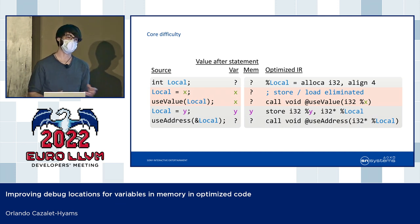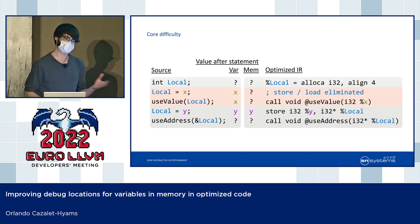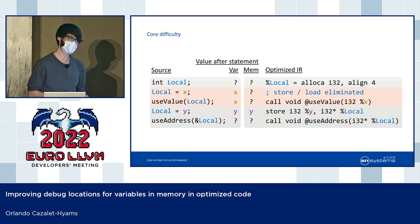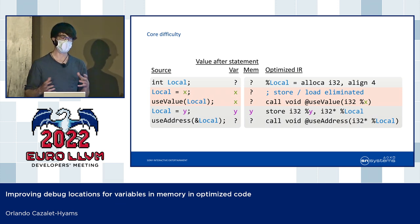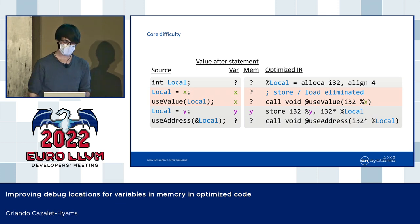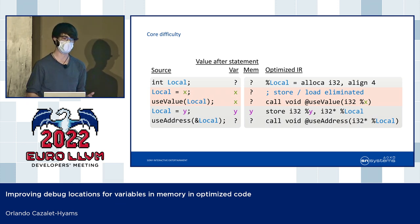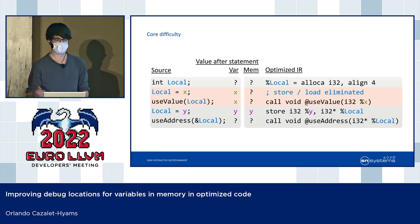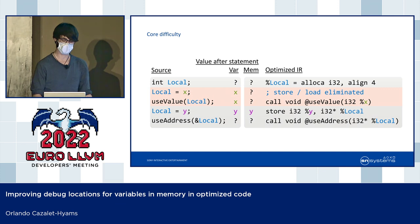The core difficulty when dealing with these kinds of locations is that at any given point in the program, the value of the variable in the source program and the value of the variable in memory in the optimized one aren't the same. The easiest example to think about is dead store elimination. At the point where the store is eliminated, the value in memory doesn't match the value of the variable in the source program.